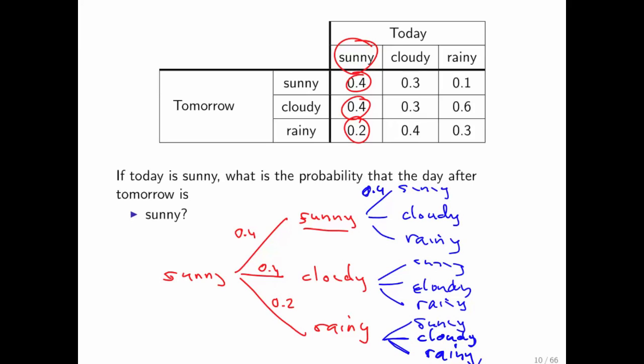Sunny to cloudy is 0.4, sunny to rainy is 0.2, etc. The probability of it being sunny tomorrow and the day after is 0.4 times 0.4. And the probability of being cloudy tomorrow and sunny the day after is 0.4 times... let's see, what was this? This was cloudy to sunny, so that's 0.3.